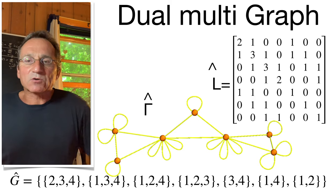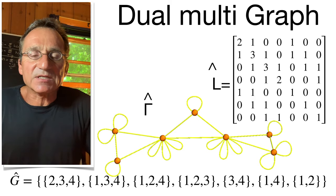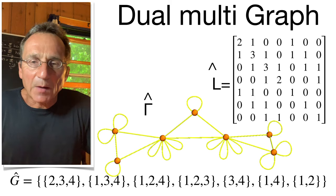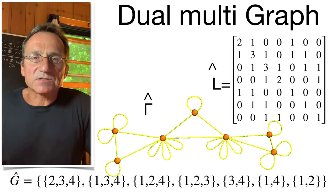This leads to a dual graph. In general, it's not isomorphic to the graph gamma, but it is isospectral.